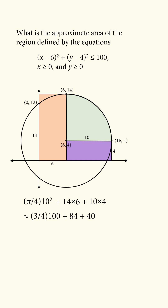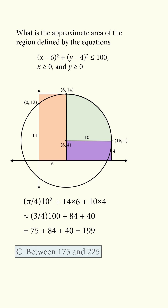Now pi is approximately equal to 3, so we have 75 plus 84 plus 40, which is 199, and that gives us the correct answer choice between 175 and 225.